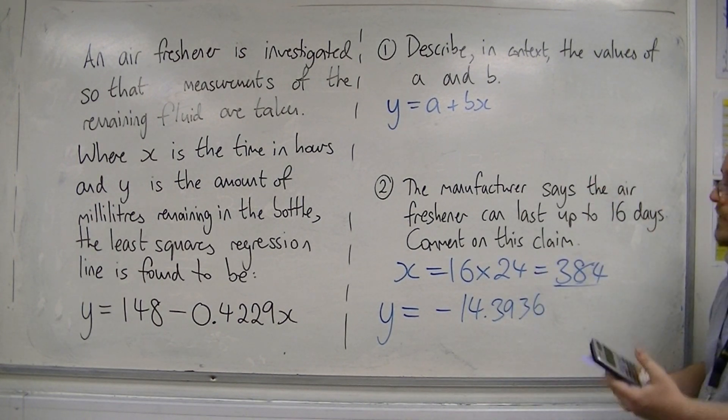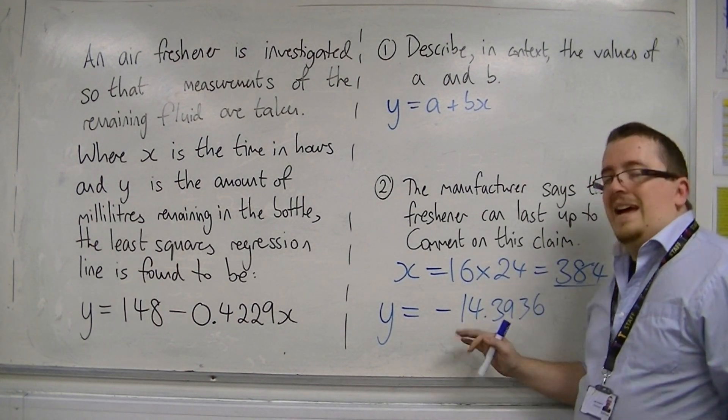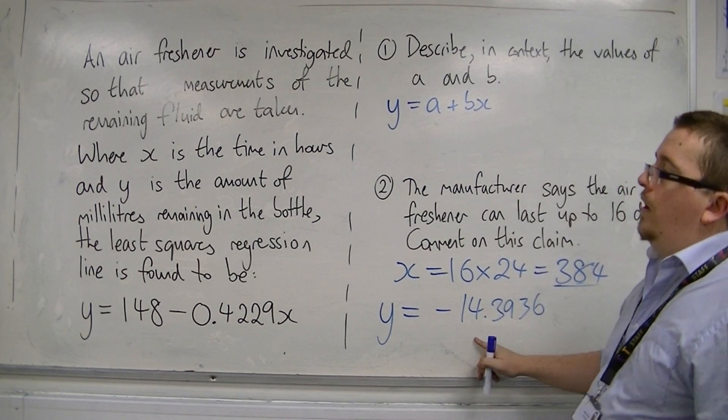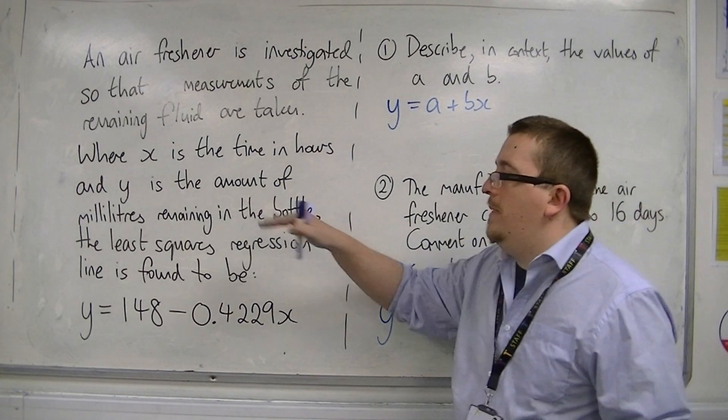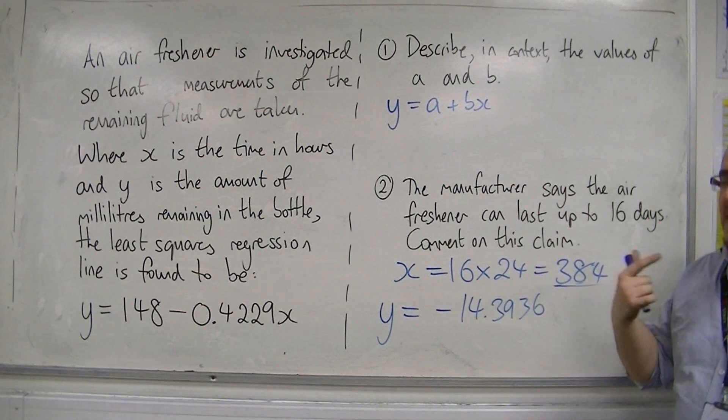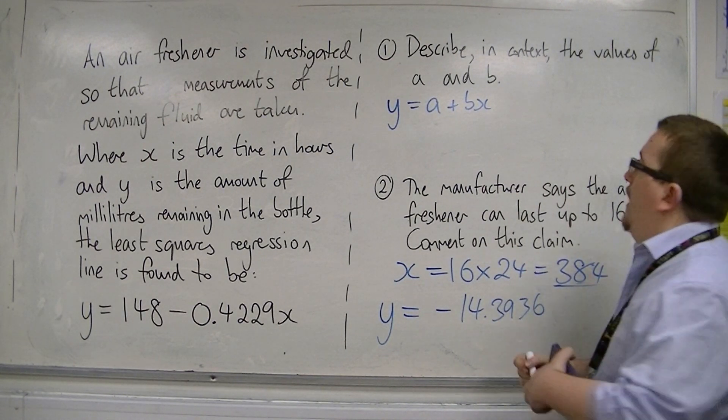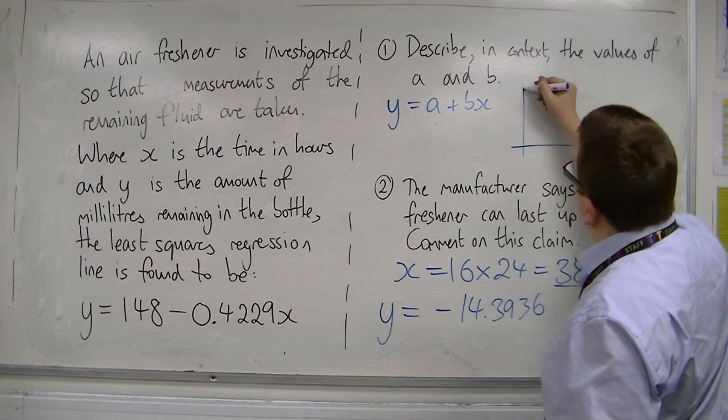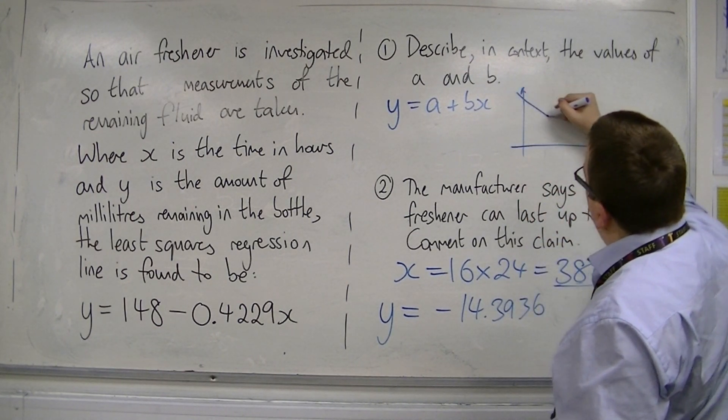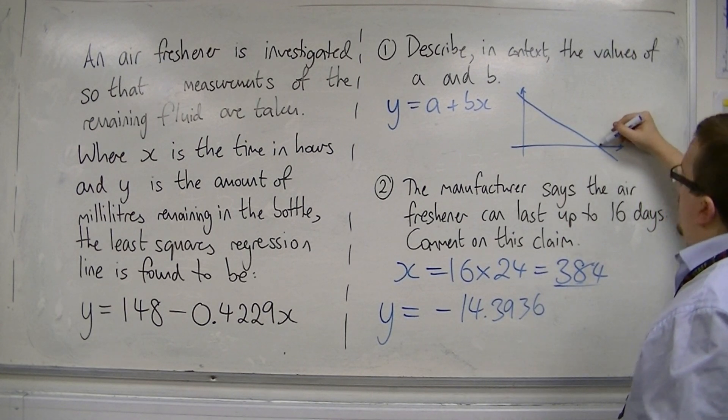Now what that means is that I cannot have a negative value of y. I can't have a negative amount of liquid left in the bottle. And so that means that the least squares regression line has come down and gone beyond the x-axis.